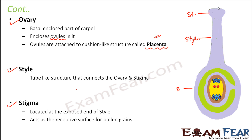The stigma acts as the receptive surface for pollen grains. For reproduction, fusion must take place between the male and female gametes. The male gametes are present in the stamen, so they need to come from the stamen to the carpel. The stigma receives the incoming pollen grains, and then through the tube-like style the pollen grains travel to the ovary. Inside the ovary are the ovules, and inside the ovules is the egg, with which the male gamete will fuse so that fertilization takes place.